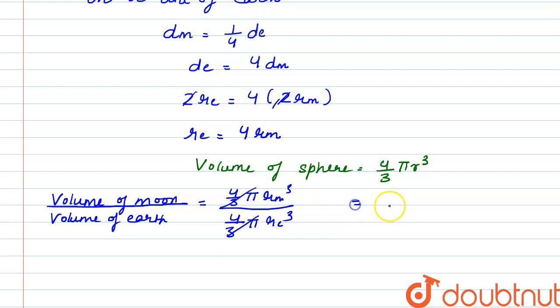So the ratio comes out to be rm cube divided by re cube, and re can be written as four times rm. So it would be rm cube divided by 4rm cubed, which is 64 rm cube.